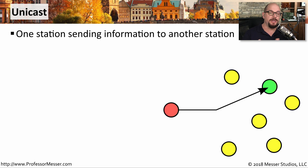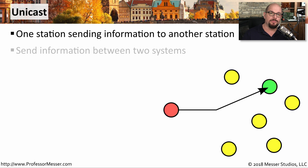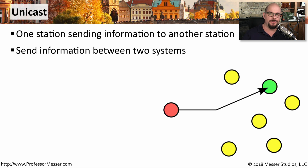In network communication, a unicast is when one device is sending information to one other device. It's a one-to-one relationship. That's why we call it a unicast, since there is a single station communicating with one other station. There are always two devices involved in this unicast communication.